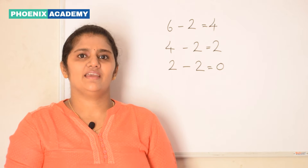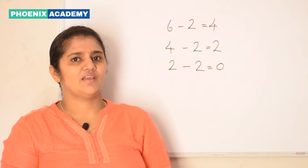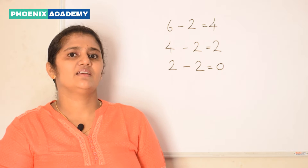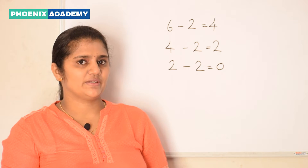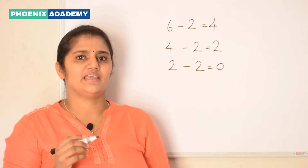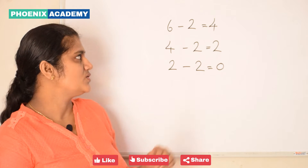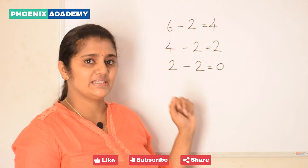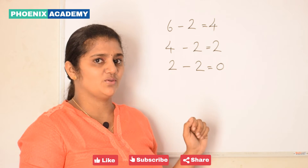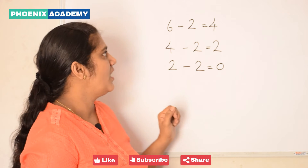In the previous example, we have divided 6 bowls to 2 kids, and each kid got 3 bowls. So we can say 6 divided by 2 equal to 3.